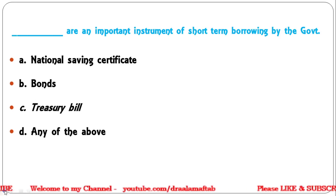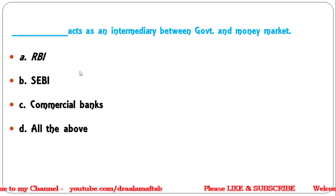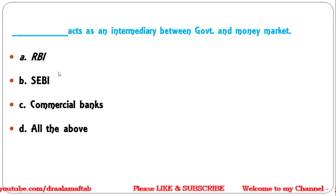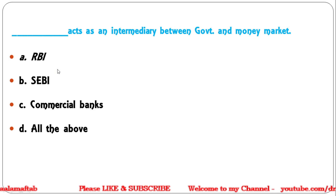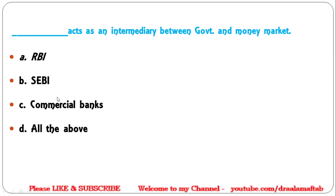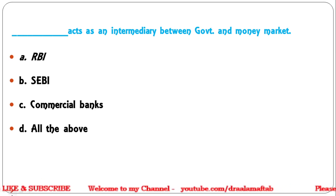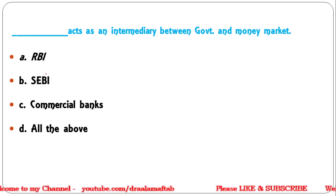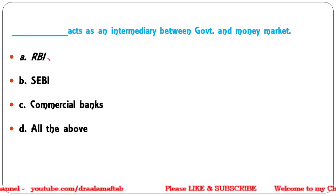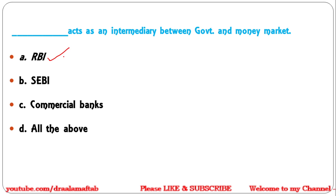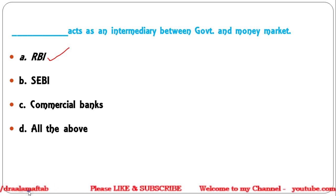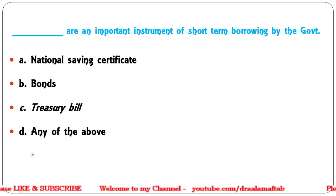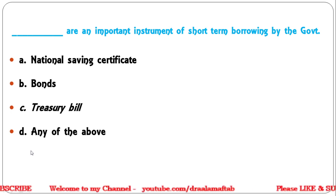Next question: who acts as an intermediary between the government and the money market — RBI, SEBI, commercial banks, or all of the above? RBI is the apex bank which acts as an intermediary between the government and the money market.